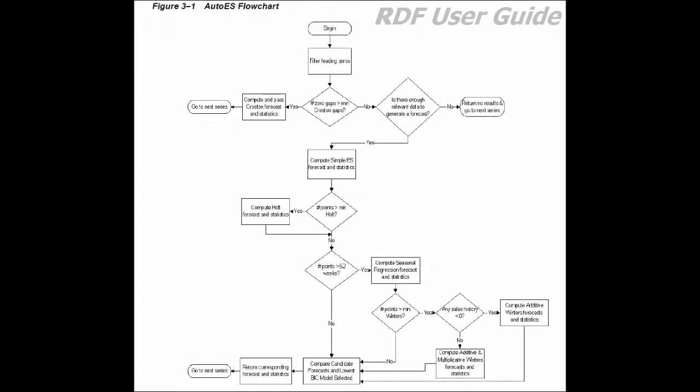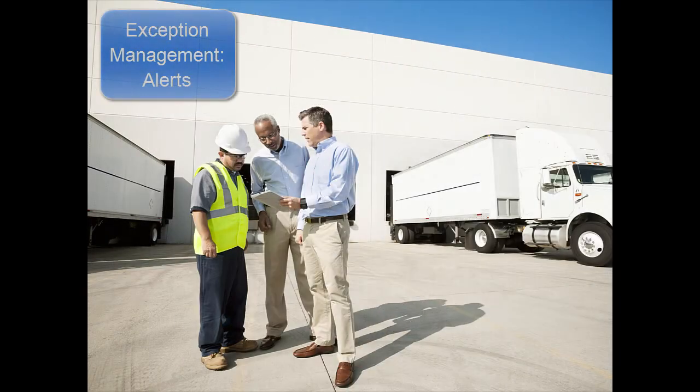To see this exact formula, look in our guide and learn more about the Bayesian information criterion. You will also see how the Auto ES flowchart helps you understand the Auto ES process. We continue this documentation tutorial with the next topic: exception management, also known as alerts.